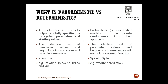There are two things here: probabilistic models and deterministic models. A deterministic model's output is totally specified by its system parameters and starting values. For example, a relation between miles and kilometers — I know the conversion and it will never change. There is an absolute relationship defined and whatever values I have will determine this model. The probabilistic or stochastic models incorporate randomness into each approach. In a deterministic model, the identical set of parameter values will always result in the same result — as many times as I go through the model, I always get the same result because it is defined by a clear equation.